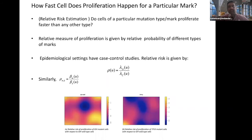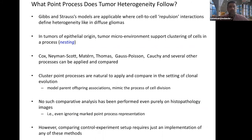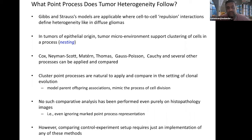Tumor heterogeneity is one of the biggest questions in cancer. We can try to understand cell-to-cell repulsion interactions in diffuse brain tumors called gliomas, and apply cluster processes for tumors of epithelial origin where clustering could be facilitated — making the intensity random — and it is natural to apply this in the setting of clonal evolution. Unfortunately, large-scale integration of pathology and spatial point process has not yet been broadly undertaken, although there are some literature doing spatial analysis.